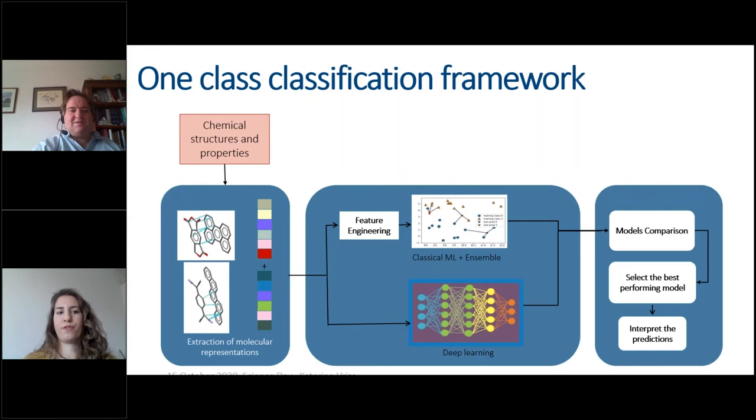The overview of the framework of the one-class classification framework is shown here. We extracted the molecular representations of the pairs using Dragon descriptors and then we applied some classical machine learning techniques and then some deep learning techniques. We should note that for the classical ML we needed to do quite a lot of feature engineering as well to reduce the dimensionality of our data for better predictions. After that we compared all the models together and we selected the best one to try to interpret the predictions to get some physical meaning about why this model gave these predictions and then continue further with the laboratory work.